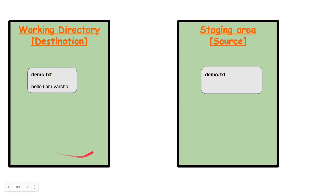To summarize pictorially: the working directory had 'Hello, I am Varsha,' whereas in the staging area it was not added because I did not write git add. This is the basic pictorial representation of git diff. You can try this out, and if you have any doubts, you can always reach me out in the comment section — I will definitely answer. This is all for this video, and we're going to learn about the different diff commands in the next video. Thank you.